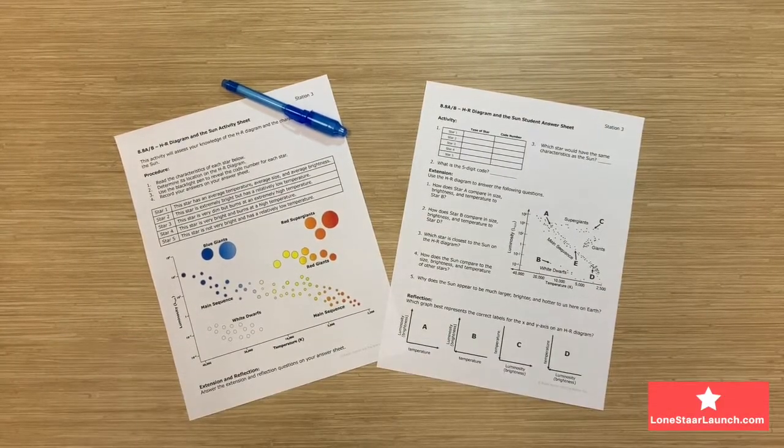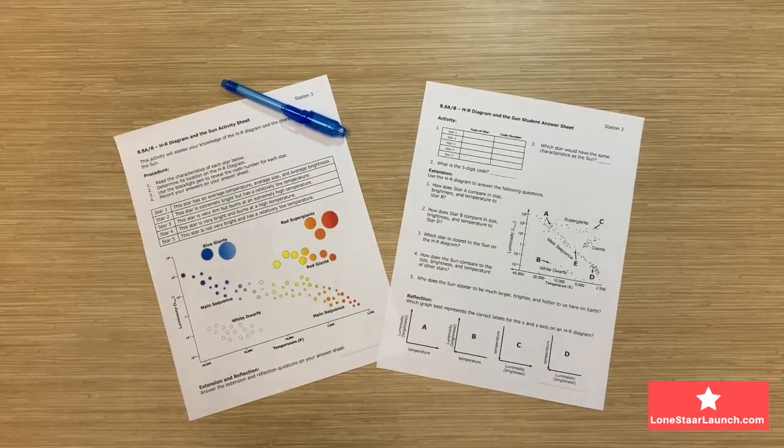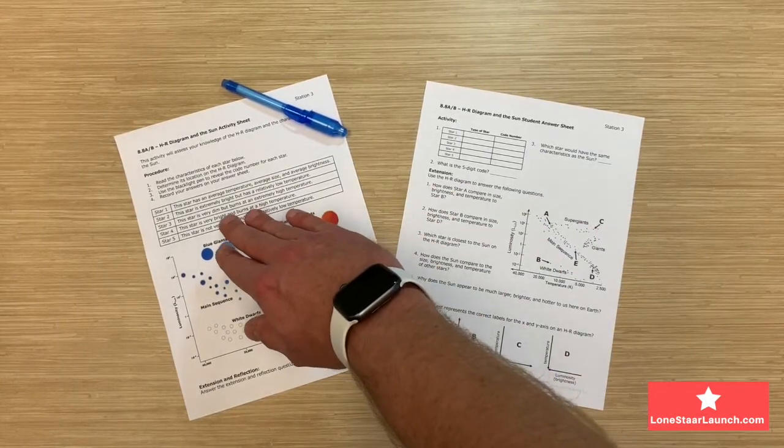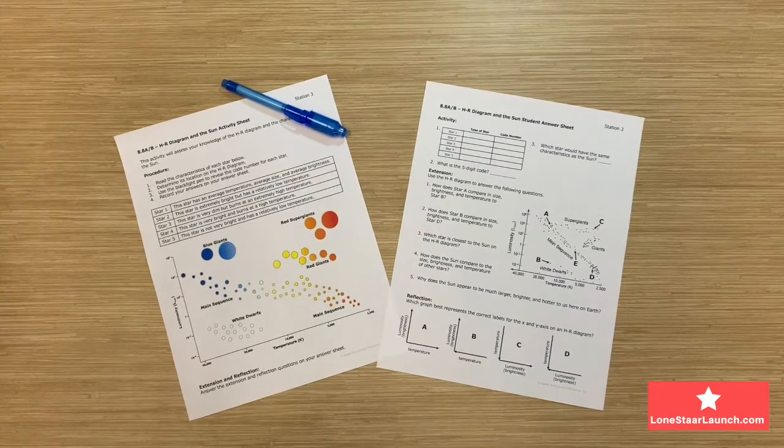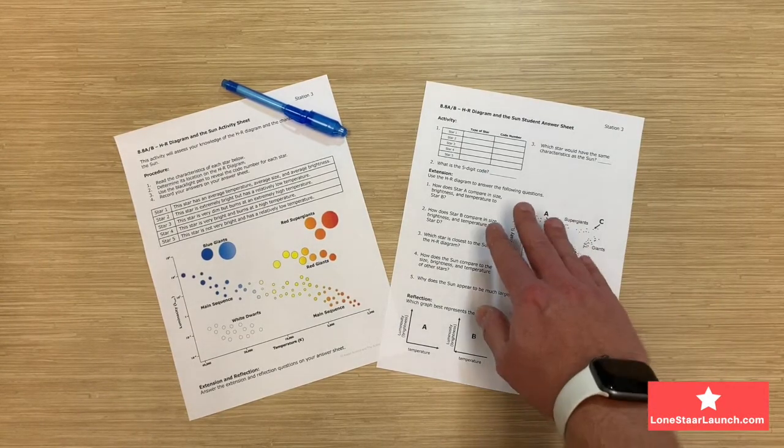This is the HR diagram in the sun station for TEKS 8-8-A and 8-8-B. On the left-hand side, you will see the activity sheet that will stay with the station the entire time.